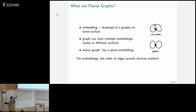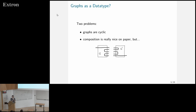Observe that for this embedding, the order of edges around a vertex is crucial. For graphs in the abstract sense we don't care — it's just a set of edges. But if we draw them, the order really matters; this rotation around vertices is key. So how do we find something that could be a data type for graphs? We have two problems. First of all, graphs are cyclic, and that's not great for an inductive data type.